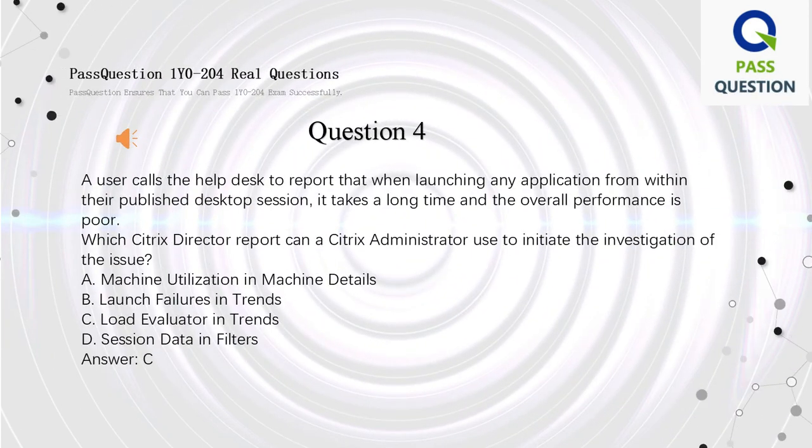Question 4. A user calls the Help Desk to report that when launching any application from within their published desktop session, it takes a long time and the overall performance is poor. Which Citrix Director report can a Citrix Administrator use to initiate the investigation of the issue? A. Machine Utilization in Machine Details. B. Launch Failures in Trends. C. Load Evaluator in Trends. D. Session Data in Filters. Answer: C.